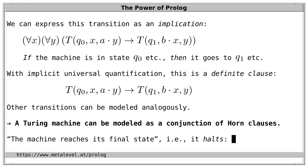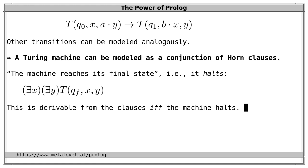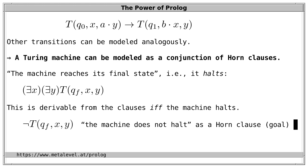The statement that the machine reaches its final state — that it halts — can also be expressed as a logical formula: there exists tape content such that the machine reaches QF, the final state. This sentence is a logical consequence of the clauses that model the Turing machine, and by the completeness theorem therefore derivable from them, if and only if the machine halts. The negation — the machine doesn't halt — is even a Horn clause, specifically a goal clause. If we add this clause to the Horn clauses modeling the Turing machine, the entire set of clauses is unsatisfiable if and only if the Turing machine halts.